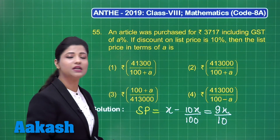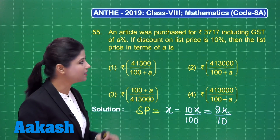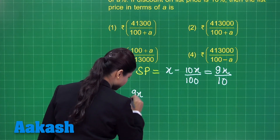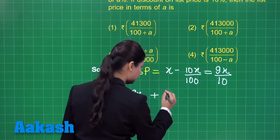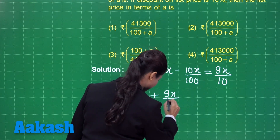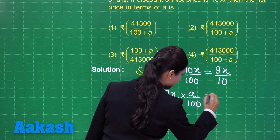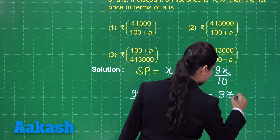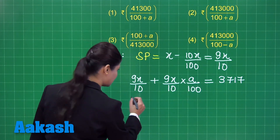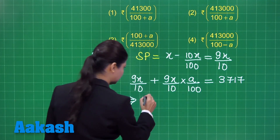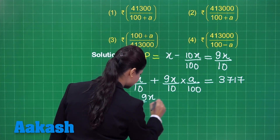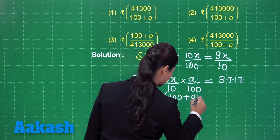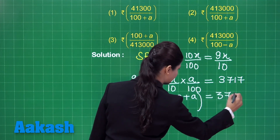As we know, the article was purchased for rupees 3,717 including GST of A percent. If I take this selling price and add A percent of this, that is 9X upon 10 into A upon 100, I get the total selling price including GST of A percent. When you simplify this, it reduces to 9X upon 1000 into 100 plus A, equal to 3717.